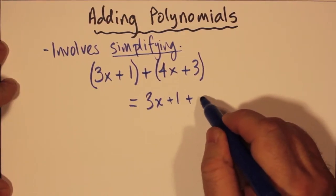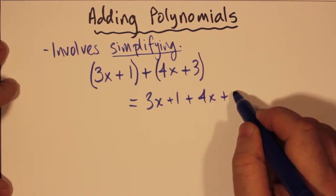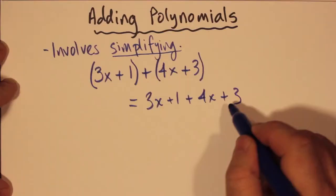The first thing I have to do when this happens is remove the brackets. So the 3x plus 1, those brackets go, and the two brackets around the 4x plus 3 go.